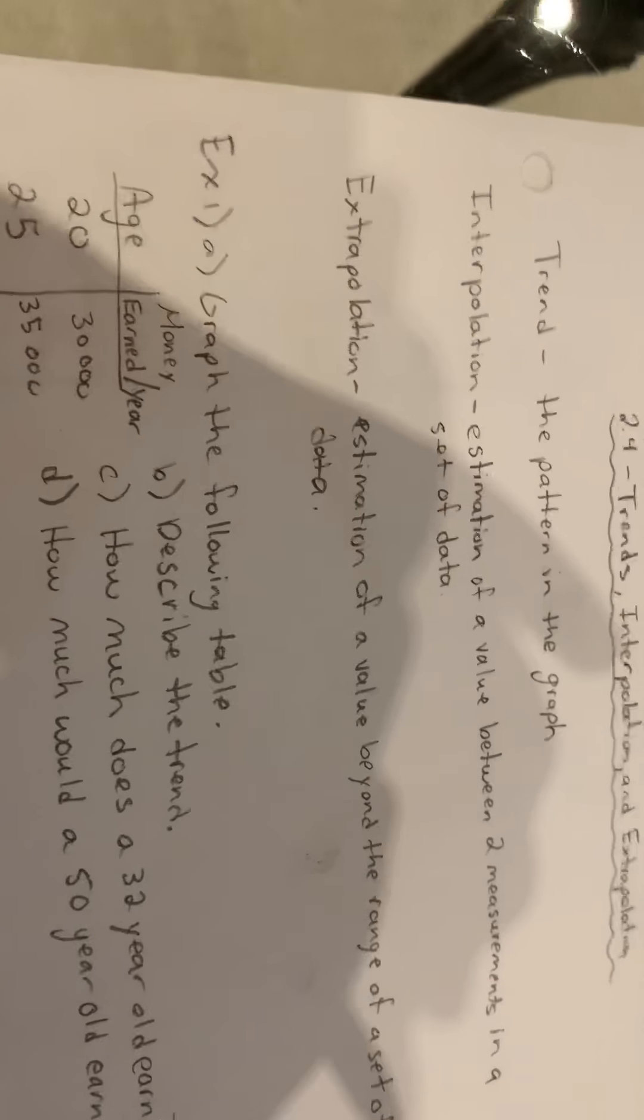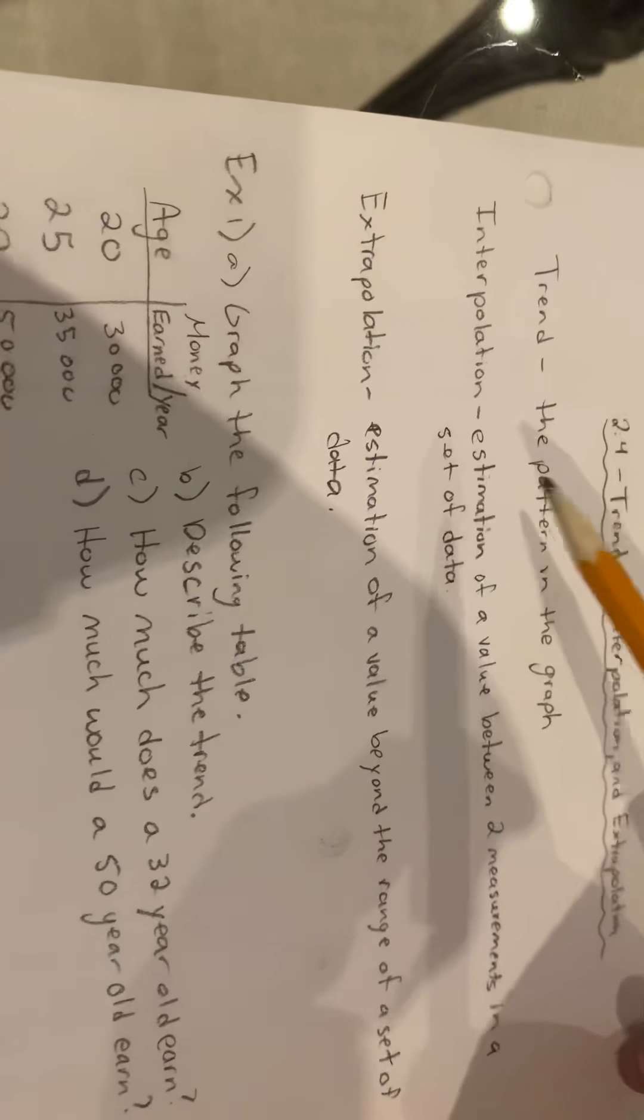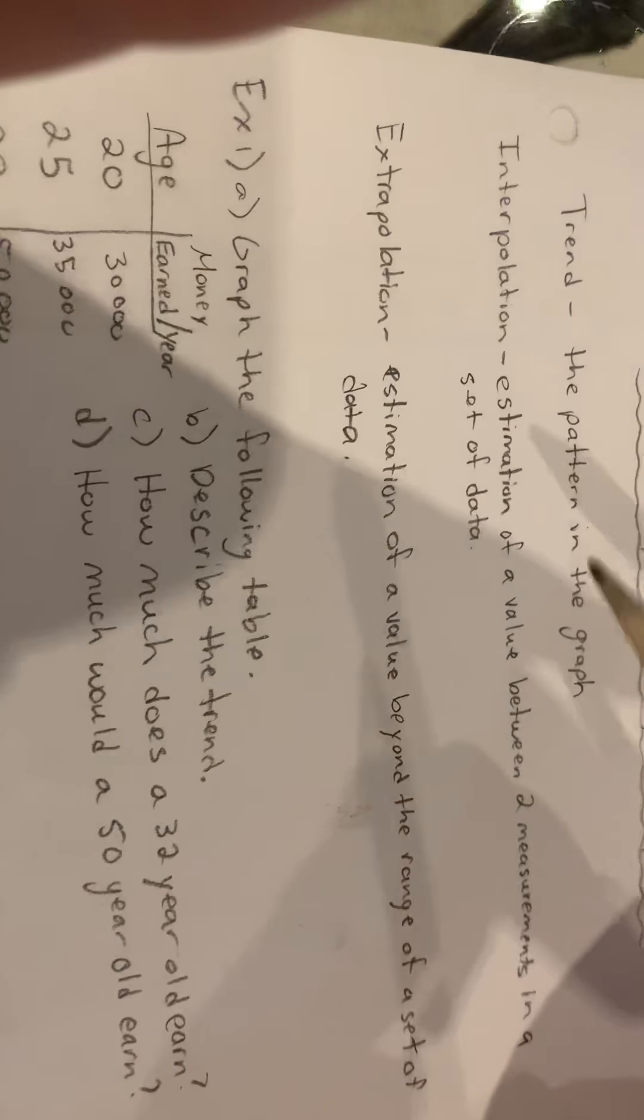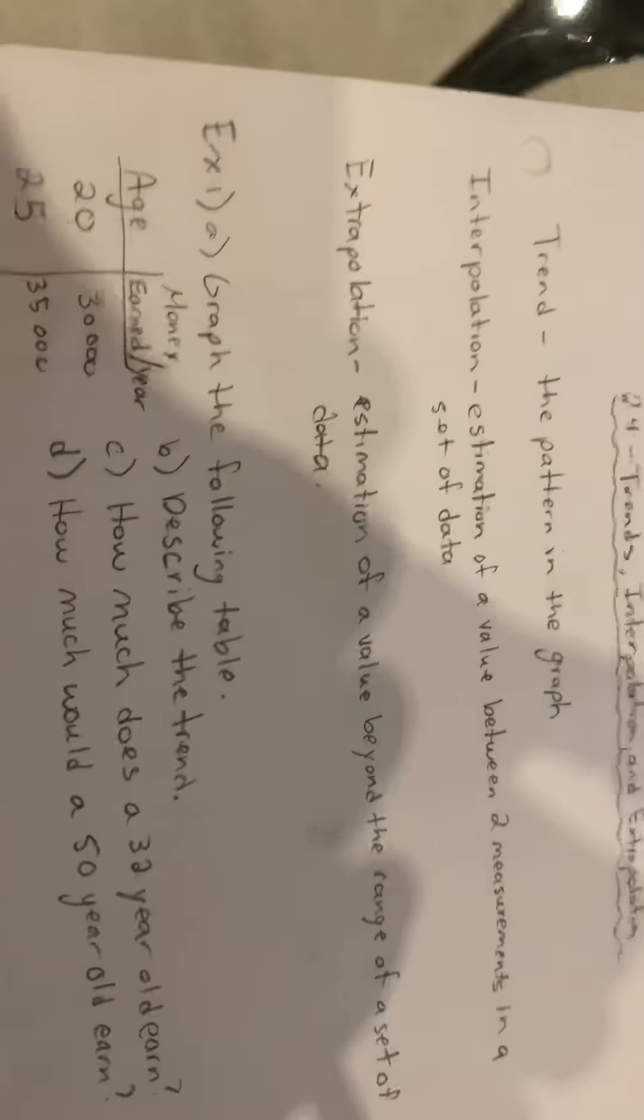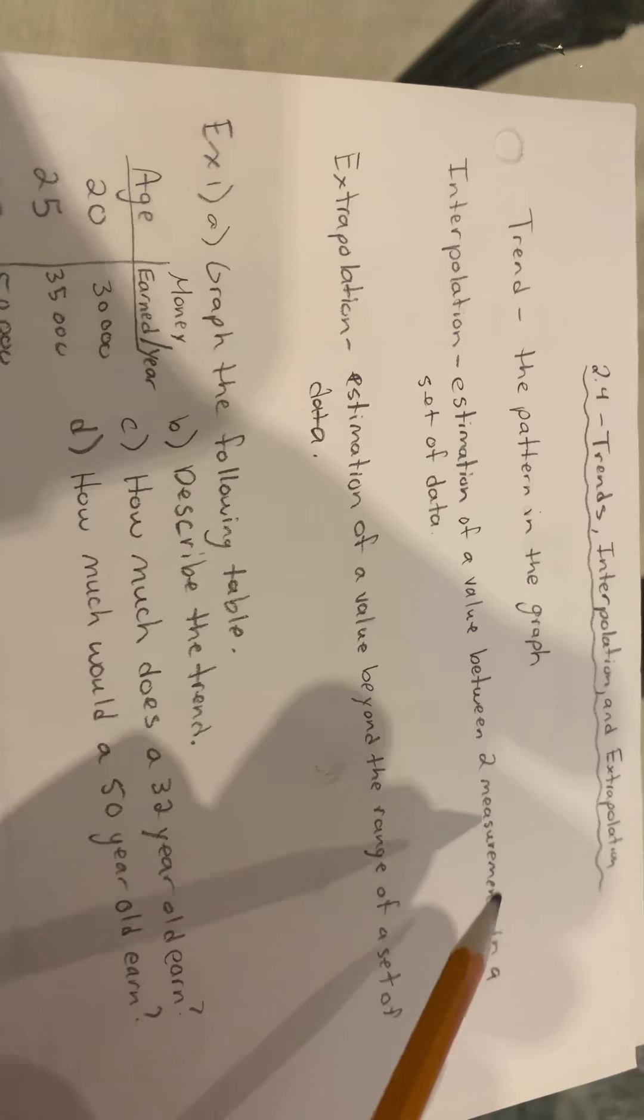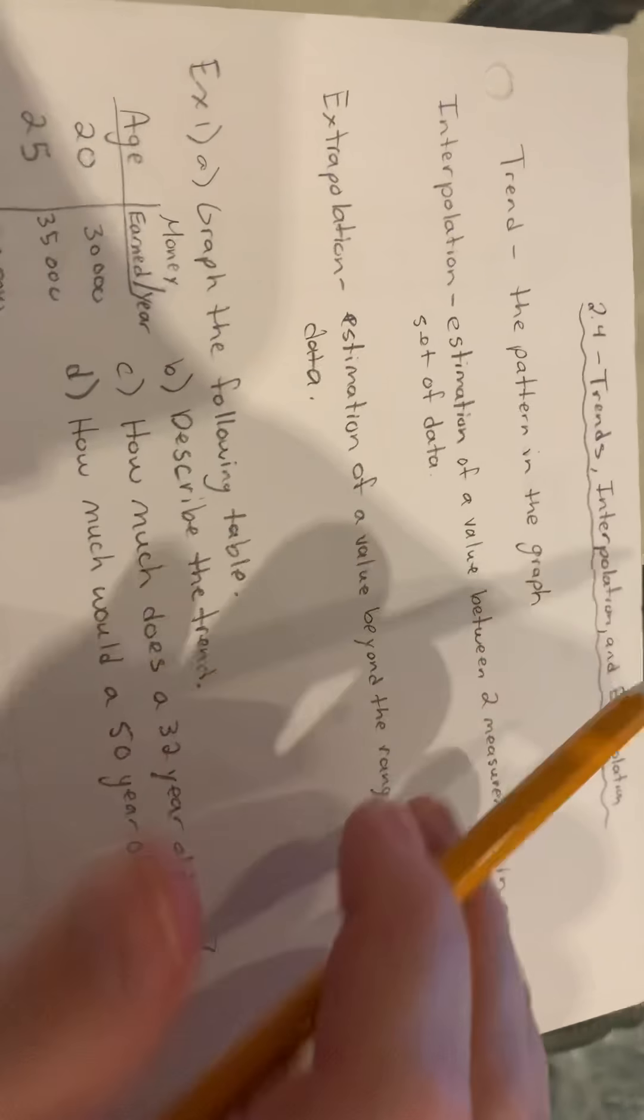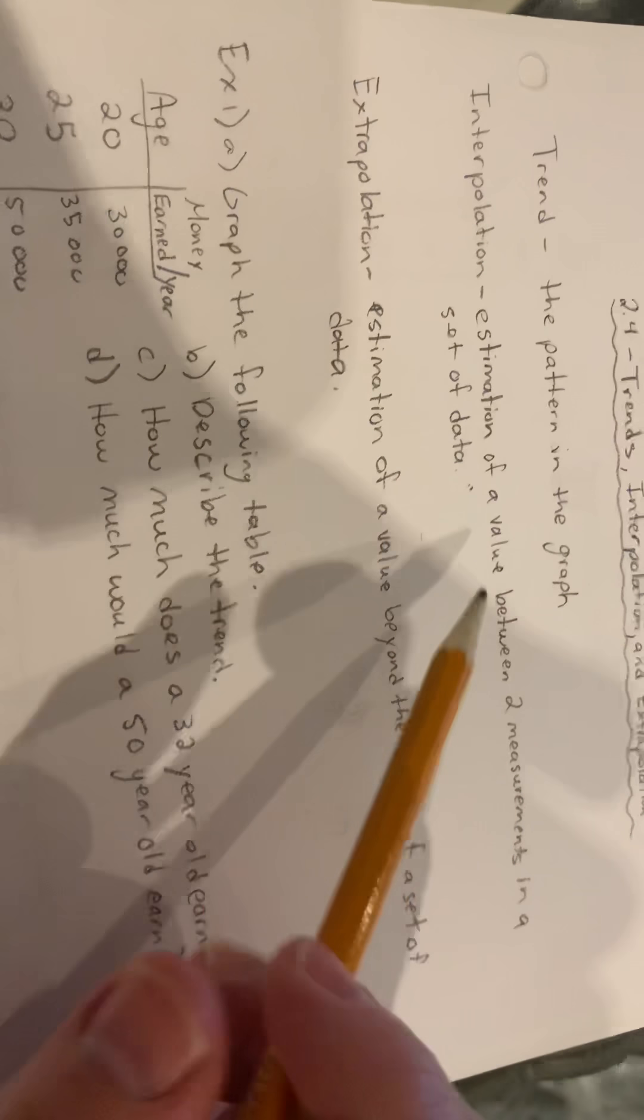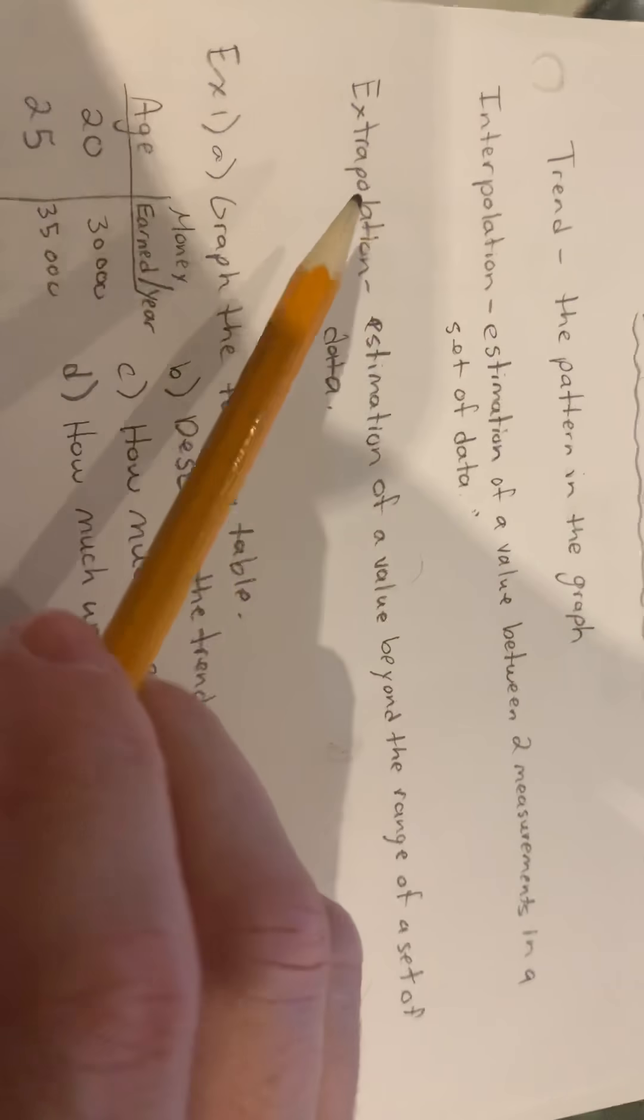A couple definitions here. A trend is the pattern in the graph. Then we have interpolation, which is the estimation of a value between two measurements in a set of data. This is going to sound a little bit weird but I will show you with the example below.